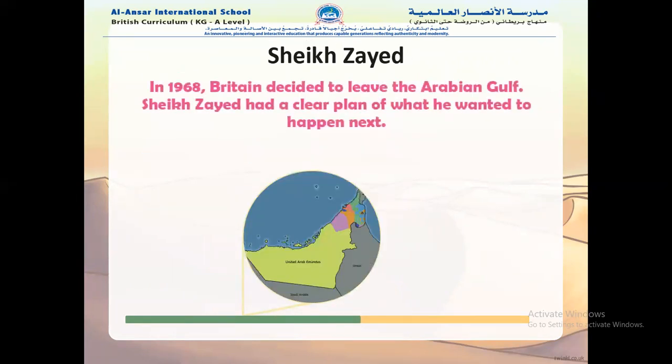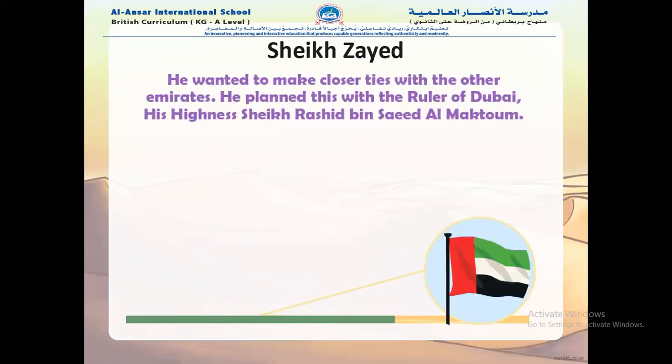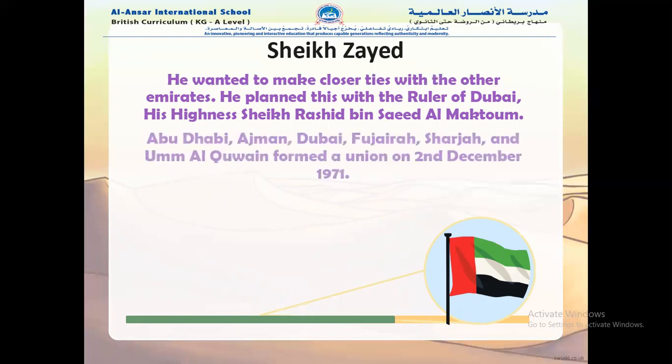In 1968, Britain decided to leave the Arabian Gulf. Sheikh Zayed had a clear plan of what he wanted to happen next. He wanted to make closer ties with the other emirates, and he planned this with the ruler of Dubai, His Highness Sheikh Rashid bin Sayyid al-Maktoum.